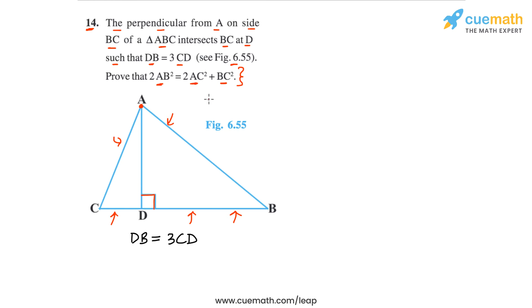To do this, we will apply the Pythagorean theorem to the two right-angled triangles that you see in the figure. What are those two right-angled triangles? One triangle is ABD and the other triangle is ACD.